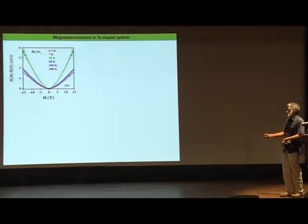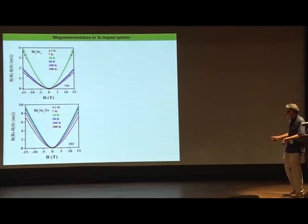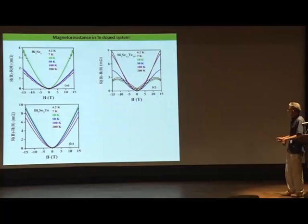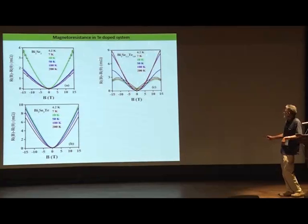The dependence of magneto resistance: as you lower the temperature you see clear SDH oscillations. In Bi₂Se₃, when you introduce tellurium the oscillations disappear or are not so clear. As you increase tellurium content, the magneto resistance shows a very unusual behavior — at low temperature it has a cusp, whereas at high temperature it has a parabolic behavior.